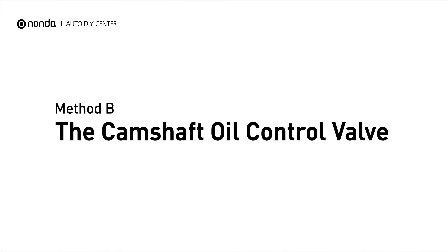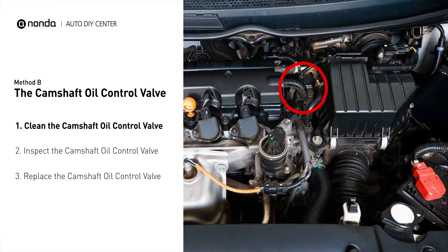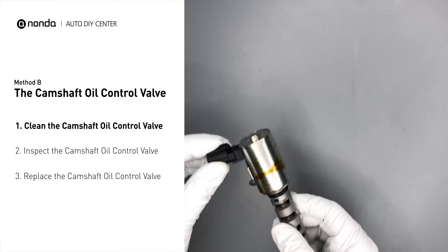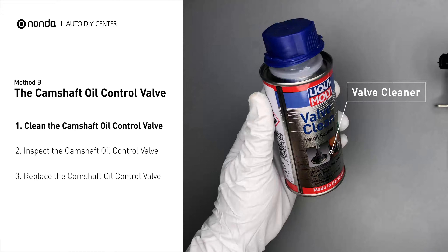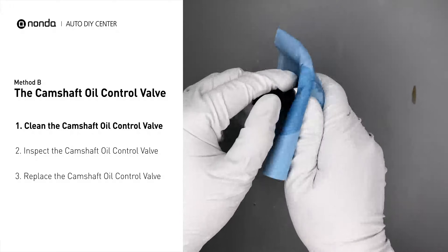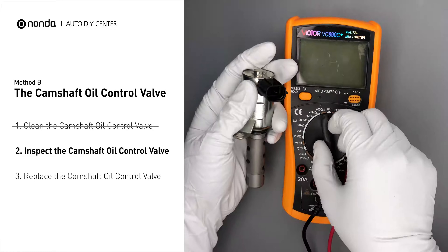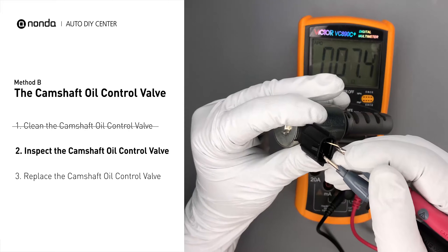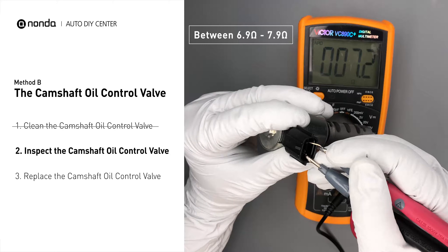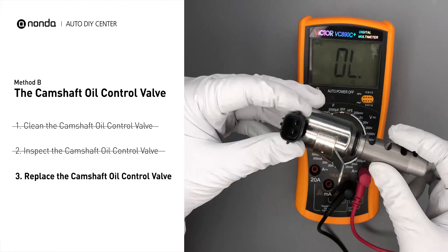Method B: the camshaft oil control valve. The camshaft oil control valves are usually located in cars that have engines with variable valve timing systems. First, carefully remove the camshaft oil control valve from the engine. Use a valve cleaner to clean the camshaft oil control valve. Then use a multimeter to perform a test on the camshaft oil control valve. At an ambient temperature of 68 degrees Fahrenheit, the valve resistance should be between 6.9 ohms and 7.9 ohms. If you do not get a reading within this range, this indicates that the camshaft oil control valve is faulty and needs to be replaced.